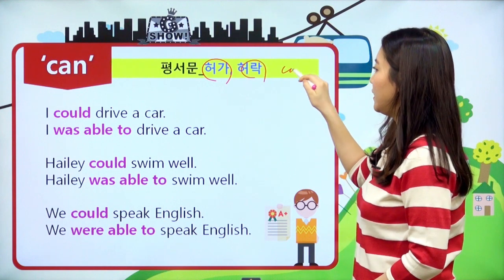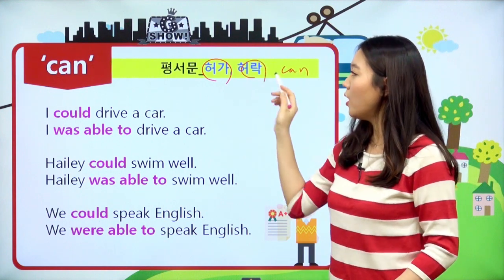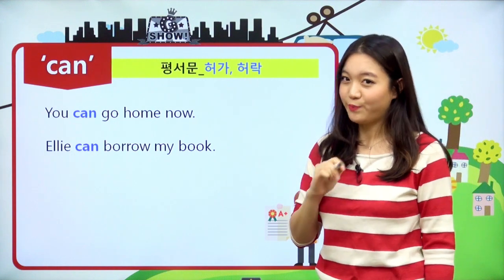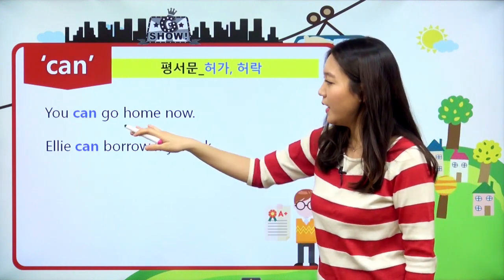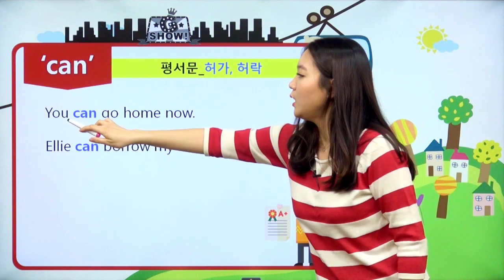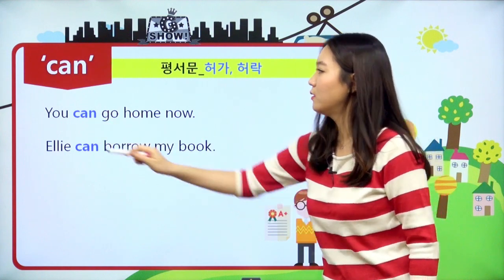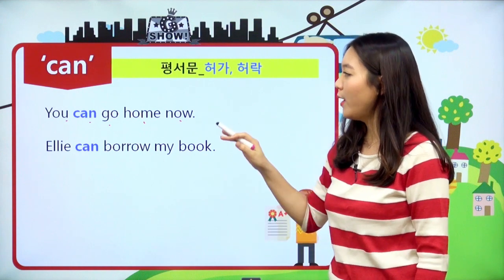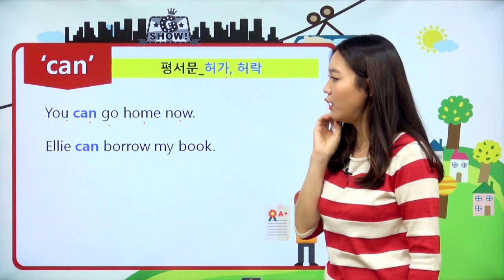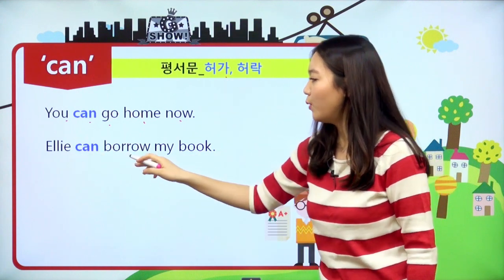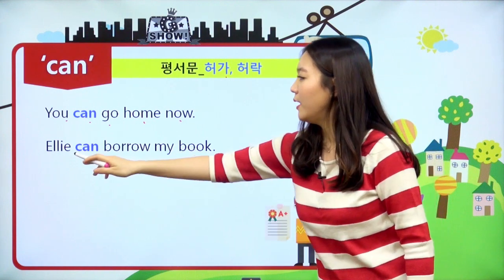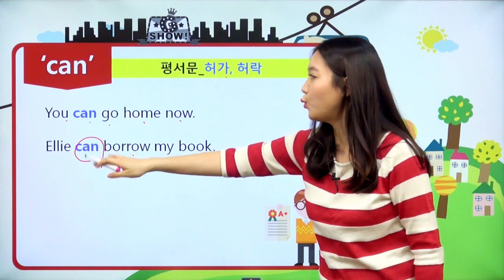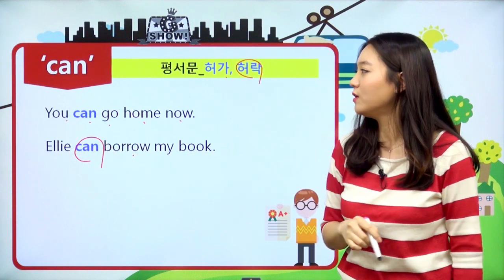허가나 허락을 나타내는 can은 be able to와 바꾸어 사용할 수 없다고 했었죠. 그래서 can만 한번 살펴볼게요. You can go home now 하면 '너는 지금 집에 가도 돼'라고 허락을 하는 거고요. Ellie can borrow my book 하면 'Ellie는 나의 책을 빌려도 돼'라고 허락을 하는 거예요.